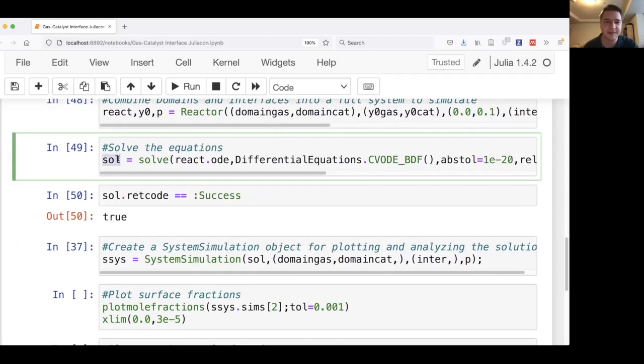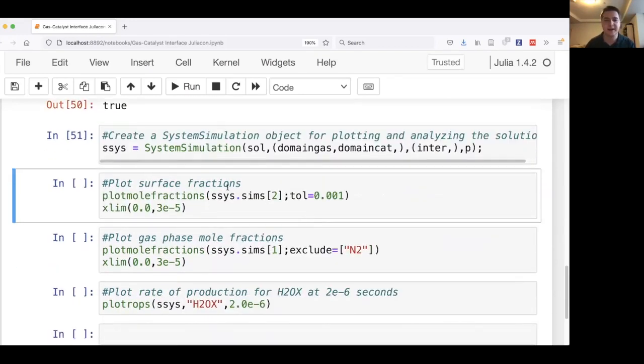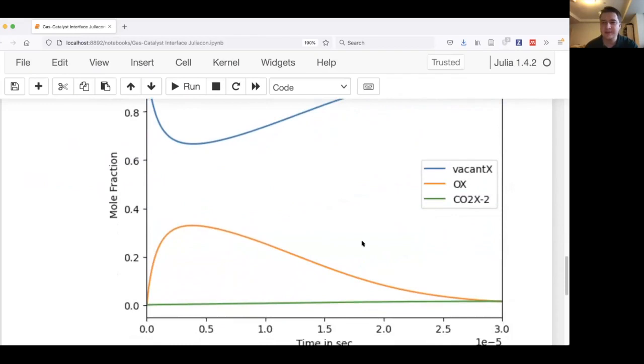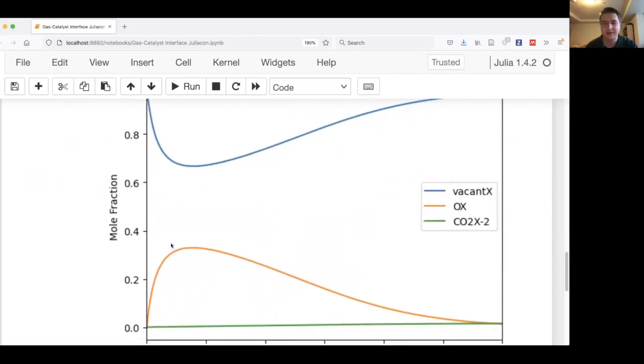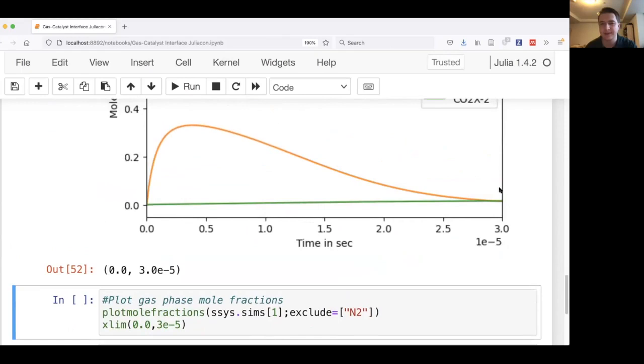Now we have this object, but this is kind of raw output, and normally what's nice to have for users is to enable them to just make all the plots that they want relatively easily. For this reason, we have system simulation, or for a single domain you'd be using a simulation object. What this allows you to do is take this solution object, combine it with the domain and interface information, and be able to use that information to make all the sorts of plots and pull information that you're interested in. So we create that object, and now we can pull out the second domain and ask for the mole fractions there. We can plot the surface fractions here.